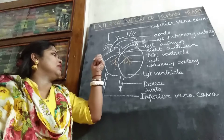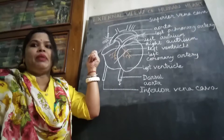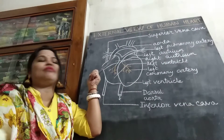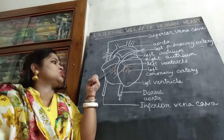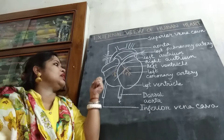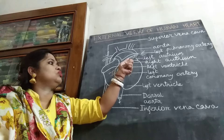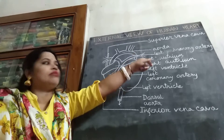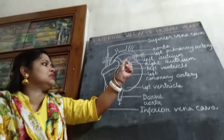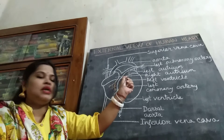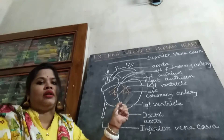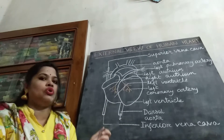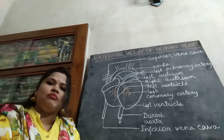When the heart contracts, the full deoxygenated blood from the right atrium goes to the right ventricle. From the right ventricle, it passes through the pulmonary artery to the lungs for purification. After purification, it comes back into the left atrium, from the left atrium it goes into the left ventricle, and from the left ventricle it moves through the aorta — ultimately passing through the dorsal aorta to the different parts of the body.